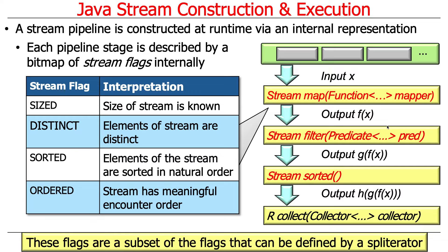Distinct means the elements of the stream are distinct — in other words, there are no duplicates. The sorted flag means the elements are sorted in natural order. Ordered, which sounds like sorted but is actually different, means the stream has a meaningful encounter order — the output needs to appear to the user in the same order as the input from the original data source. These flags are basically a subset of the flags that can be defined by a splitterator, which is used to take the data source and split it up into a stream. When you implement the splitterator method, you have to set these flags as the splitterator implementor.